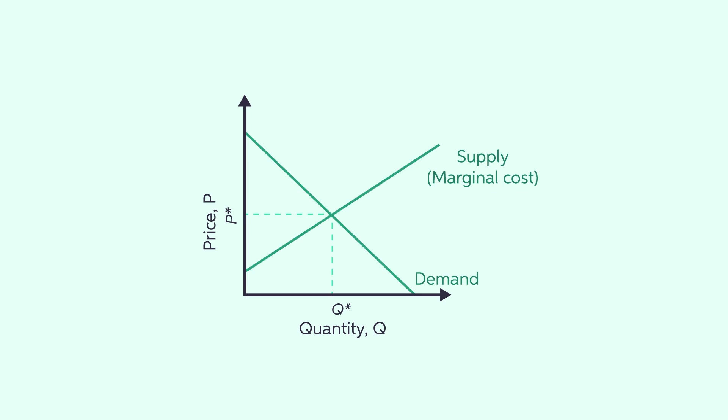Rather than go to waste, it becomes part of the producer surplus, the blue shaded area. The monopolist gets it all.